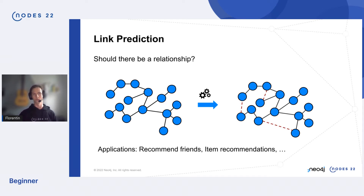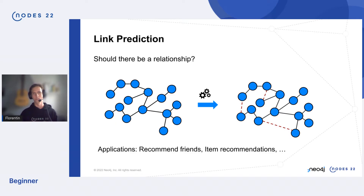You can think of different contexts: maybe you have a friend network and want to recommend new friends to people, or it's a user-product graph where you want to recommend new items. I'm curious what you could think of in your own problem domain where link prediction could apply.